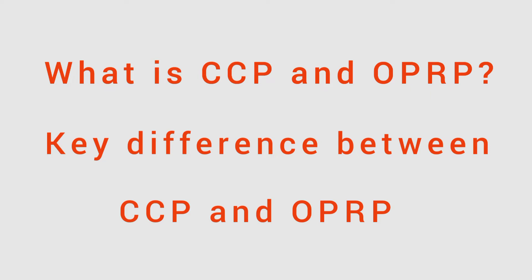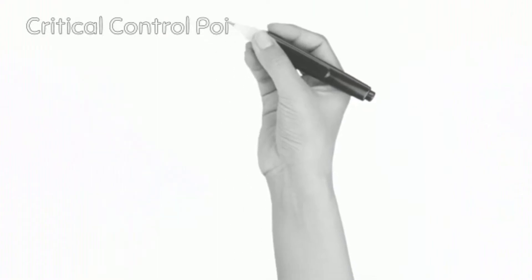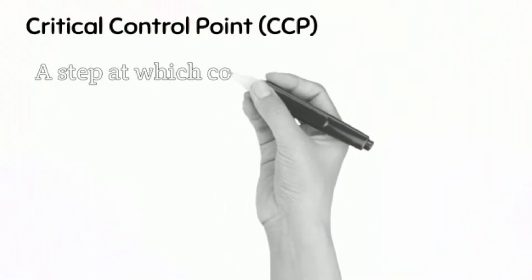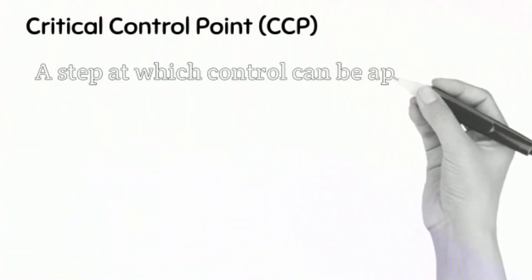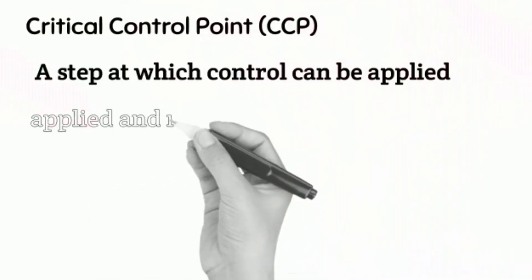This video will help you understand the key difference between CCP and OPRP, because both control measures are similar and confusing — not easily understood by everyone. I will try my best to describe the difference between these two terms. Let's start with the definition. CCP stands for Critical Control Points — a step at which control can be applied.